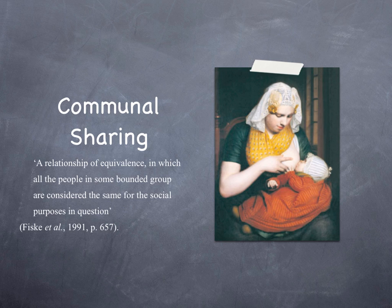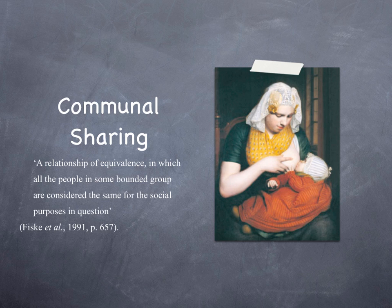The first elementary model is Communal Sharing — a relationship of equivalence in which all people in some bounded group are considered the same for the social purposes in question. In communal sharing, all members of the group are seen as sharing a common substance, and members are not differentiated. That common substance could be blood, land, a common history, or a common language. Sharing is the core concept. The needs of the group trump the needs of the individual.